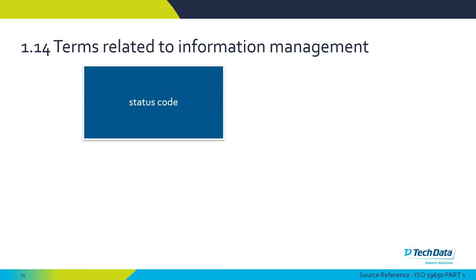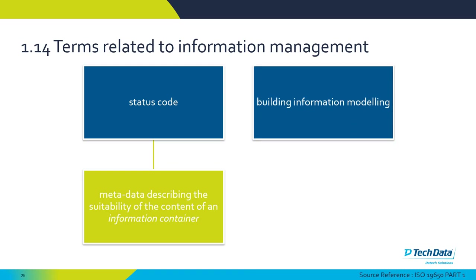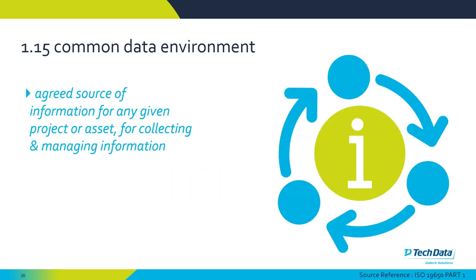Other terms related to information management include status codes — metadata attached to your file or document describing the suitability of the content. Is it being used for work in progress, being archived, being published, or just for coordination? BIM is the use of a shared digital representation of a building or civil engineering project to enable the design, construction, and operational process — something you can depend on as a basis for making decisions throughout that process.